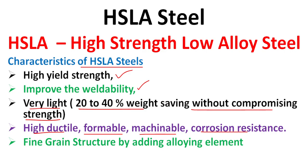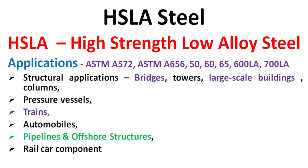Examples of various grades of HSLA steel include ASTM A572, ASTM A656, and grades 50, 60, 65, 600LA, and 700LA. The main application is for structural purposes such as bridges, towers, large-scale buildings, and columns.